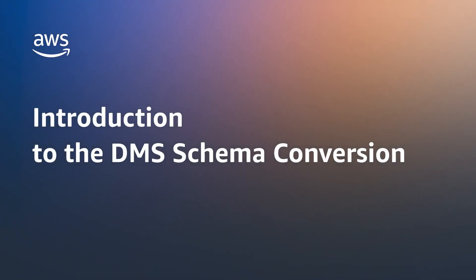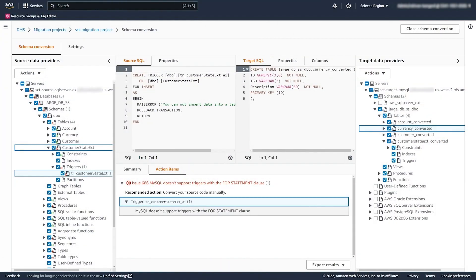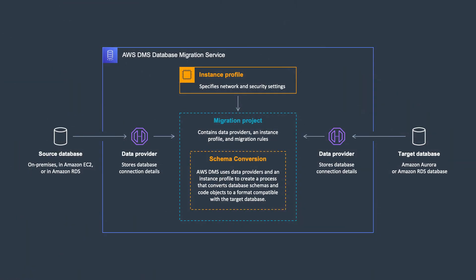Meet the new convert feature of AWS Database Migration Service. This new feature enables customers to run heterogeneous database migrations using a web-based interface. You can use the DMS Schema Conversion to assess migration complexity, convert source database objects to a format compatible with your target database engine, and apply the converted code to your target database.